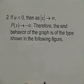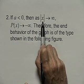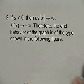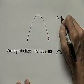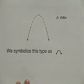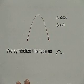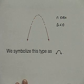There's a second statement for end behavior of an even degree polynomial. If the leading coefficient is negative, then as x goes to positive infinity or negative infinity, the function goes to negative infinity. The end behavior is of this type — n is even, the leading coefficient is negative, and the symbol that represents that end behavior is as drawn here.